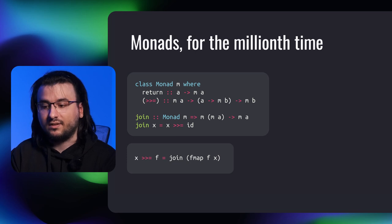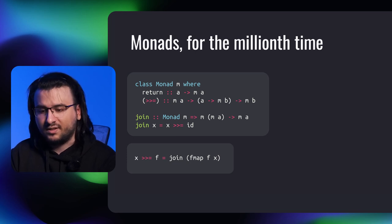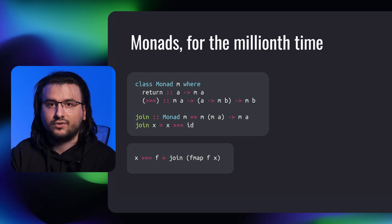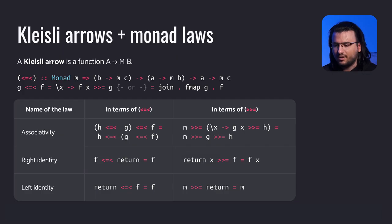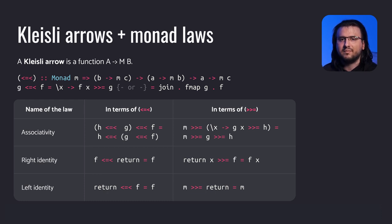Sad fact: join isn't in the monad type class. There exist technical issues with the generalized newtype deriving and Haskell's roles system — the link to the relevant wiki article is in the description. The monad laws can be described with Kleisle arrows. A Kleisle arrow is a function from a to b wrapped in some context m, usually a monadic context m.